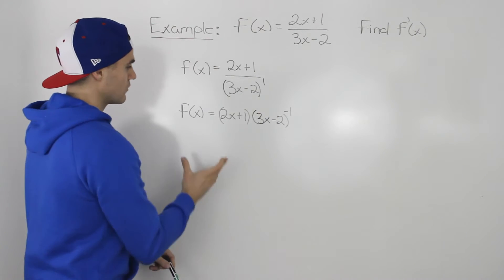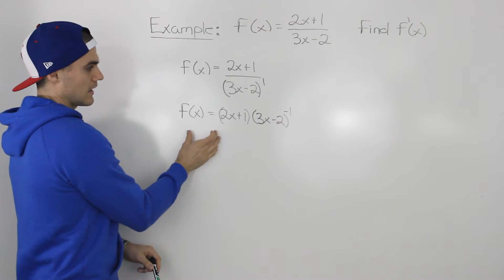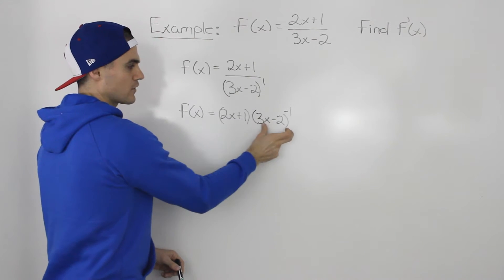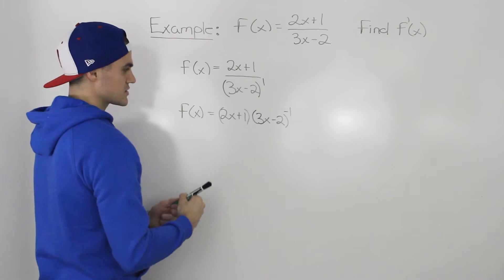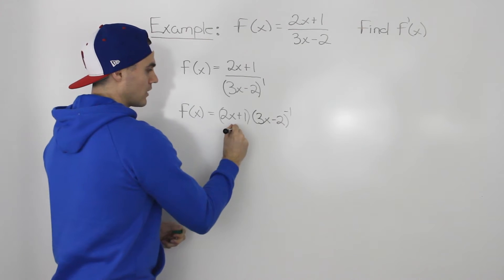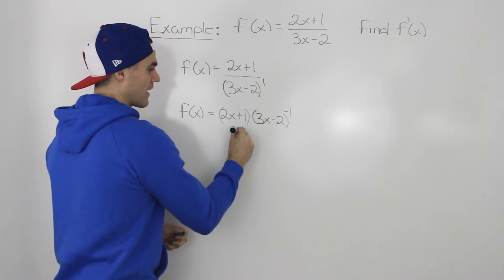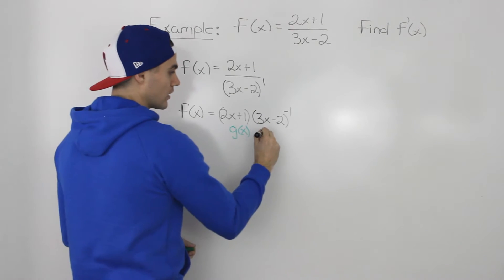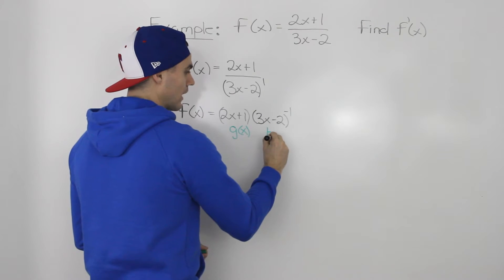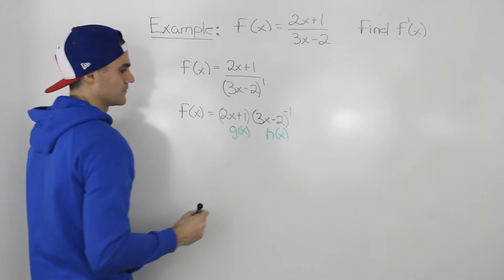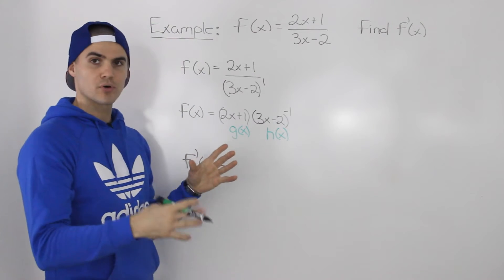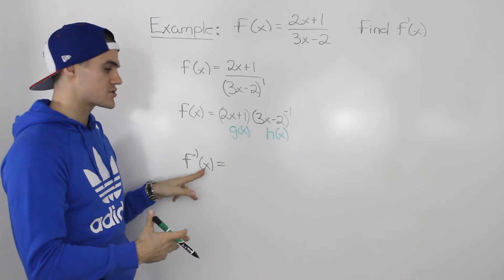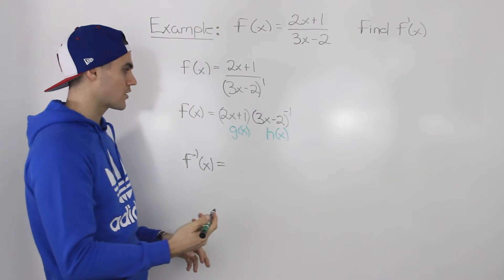Now notice how this function is the product of two separate functions. This 2x plus 1 we can label as g of x, and then 3x minus 2 to the power of negative 1 we can label as h of x.